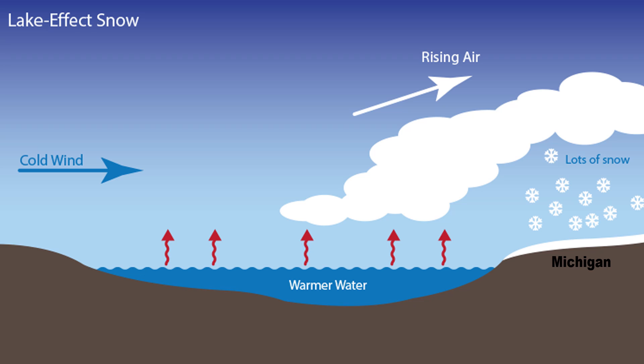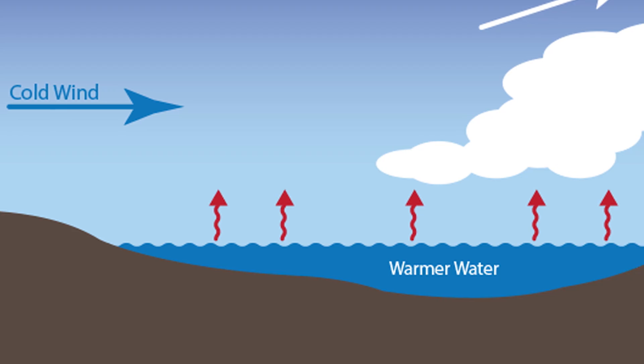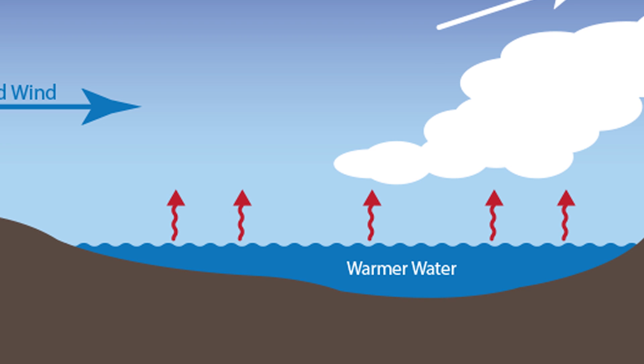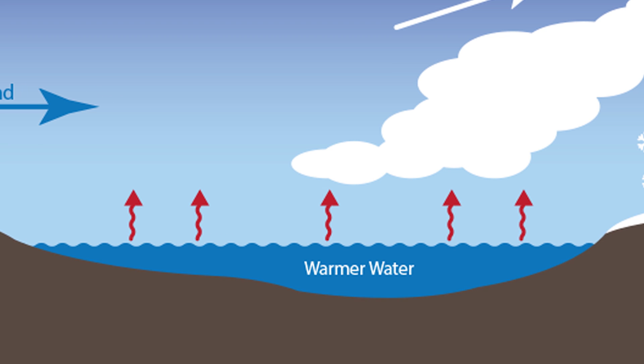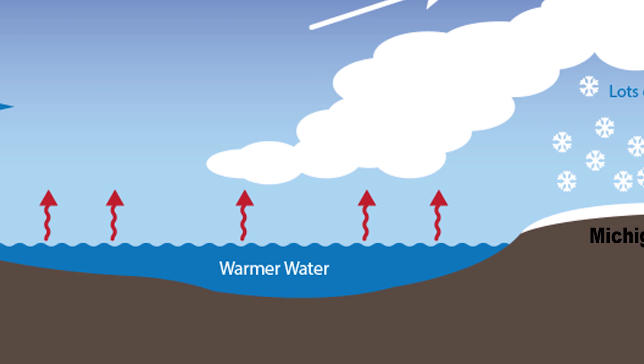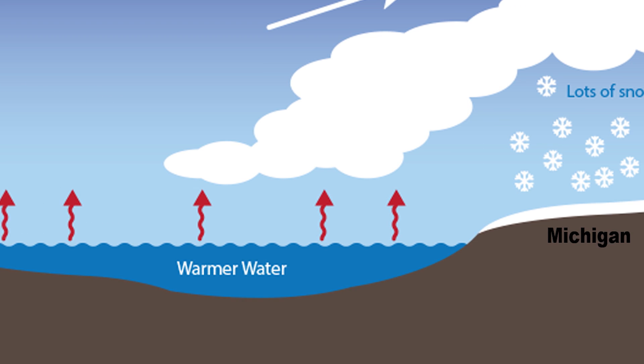First, the big factor: you want warm water and cold air aloft. That cold air moving across the warm water makes an unstable situation. The air starts to rise off of the lake and then the lake effect snow process gets going. So the warmer the lake water is and the colder it is aloft, the heavier the lake effect snow can be.